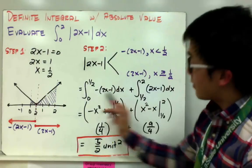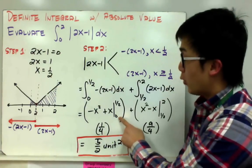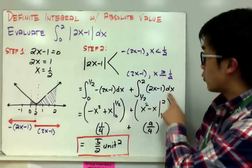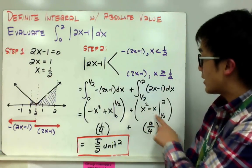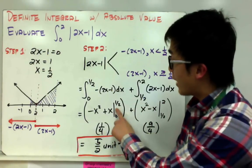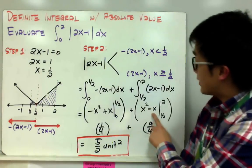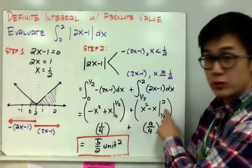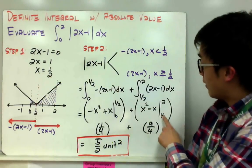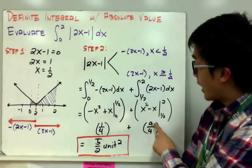I took the integral of my function, and now I evaluate the definite integral using my lower and upper limits. For my second integral, the integral of (2x minus 1) dx is x squared minus x, evaluated from 1/2 to 2. Plugging in the upper limit minus the lower limit gives 1/4 for the first function. For x squared minus x from 1/2 to 2, substituting the upper limit and subtracting the lower limit of 1/2 gives 9/4.